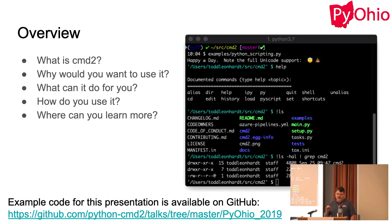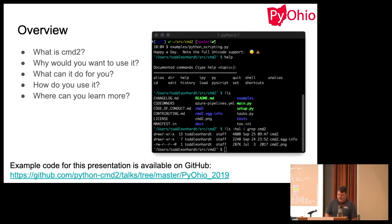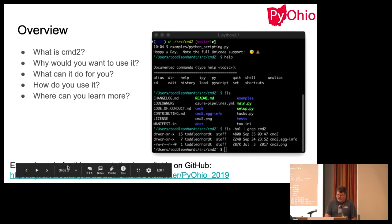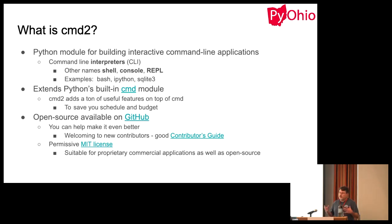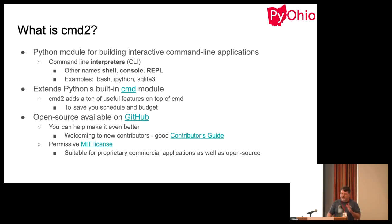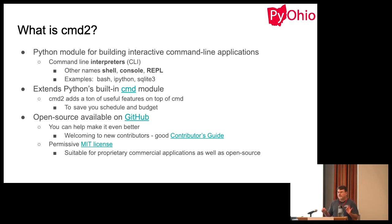We have slides and examples up on GitHub — you can click the link, and it will be available later for you to download all the example code. CMD2 is a Python module for building interactive command line applications. We're talking about interpreters — things called a shell, a REPL, or a console where you go into it and stay there, do a bunch of things, then finally exit.